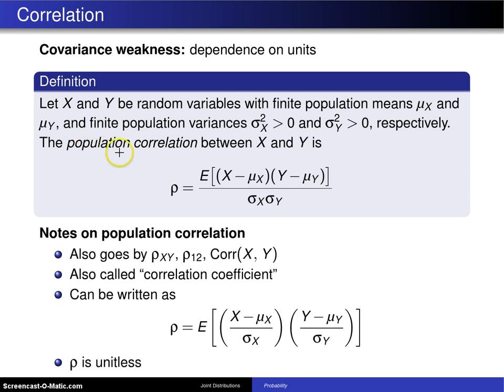This can be written as: ρ equals, if we pull this σ_X and σ_Y inside of the expected values, this is the expected value of (X - μ_X)/σ_X times (Y - μ_Y)/σ_Y. We have seen these variables before, and those are called standardized random variables.